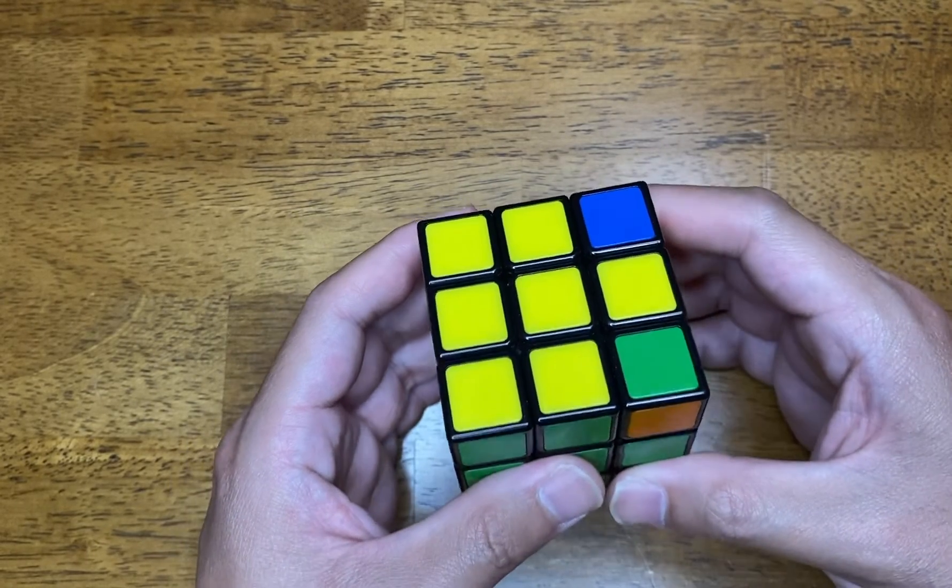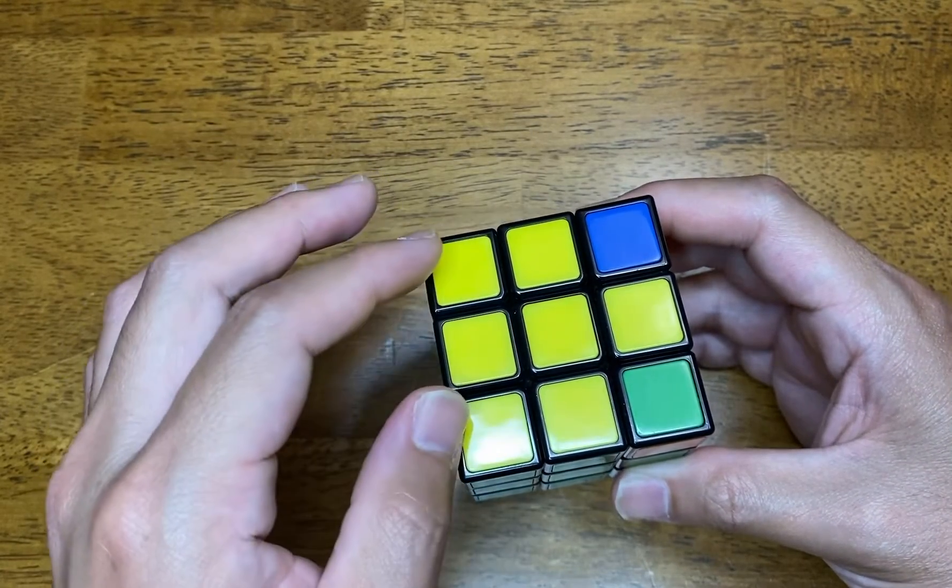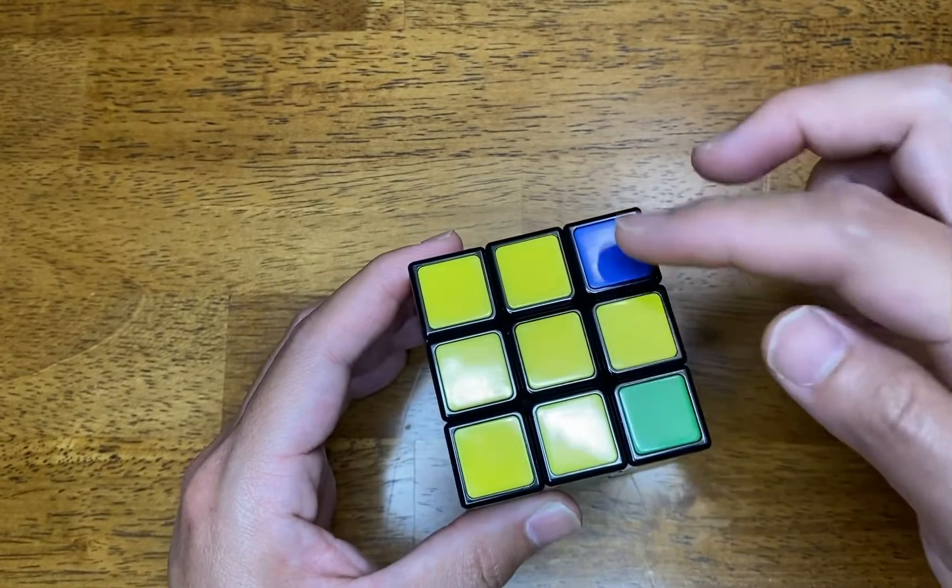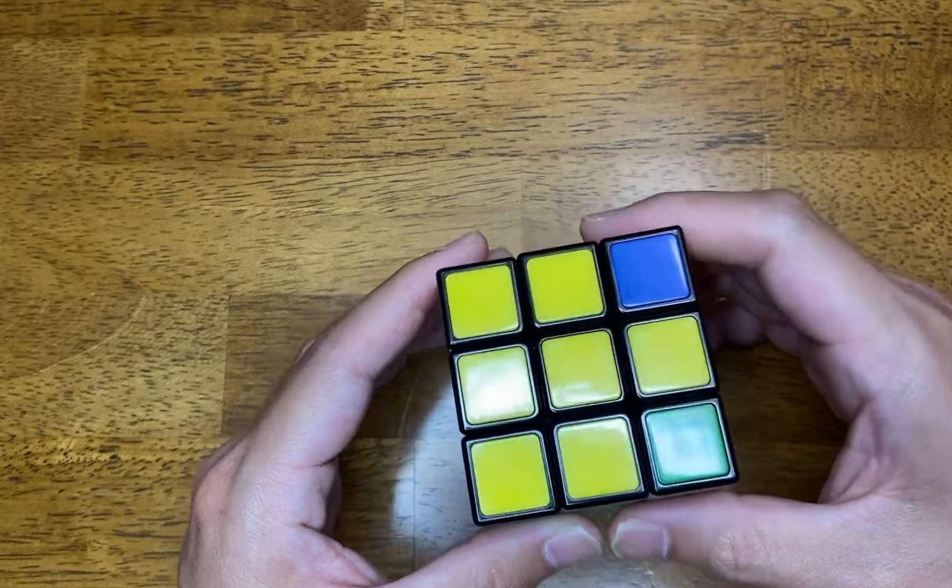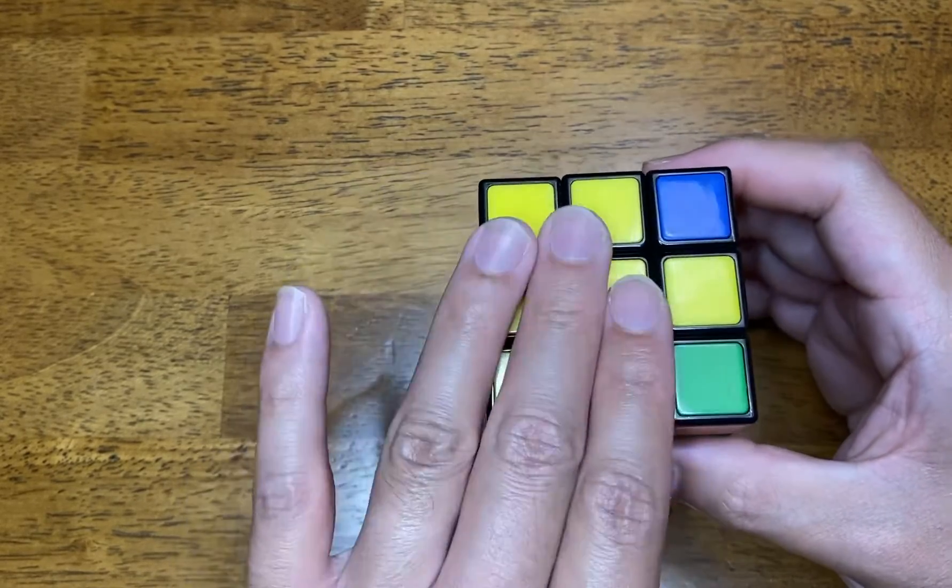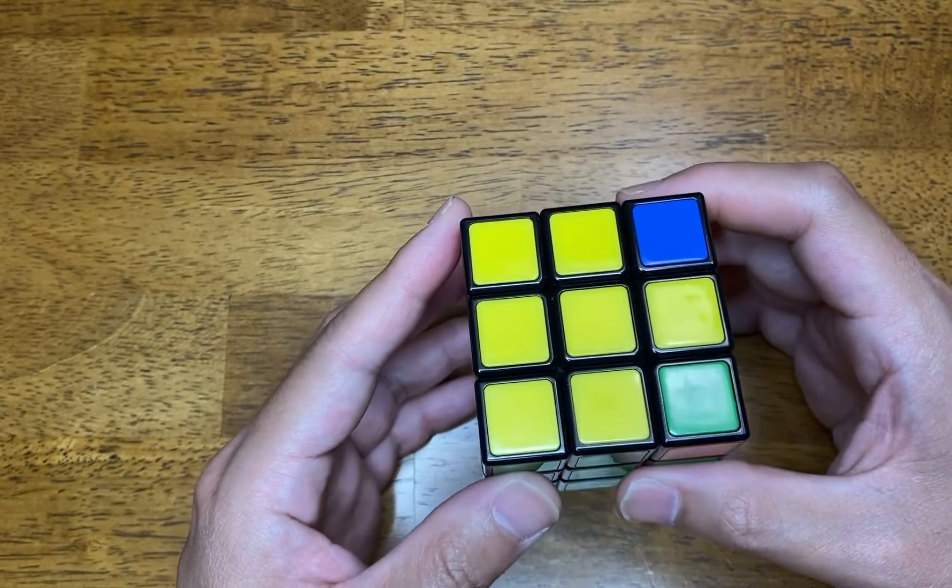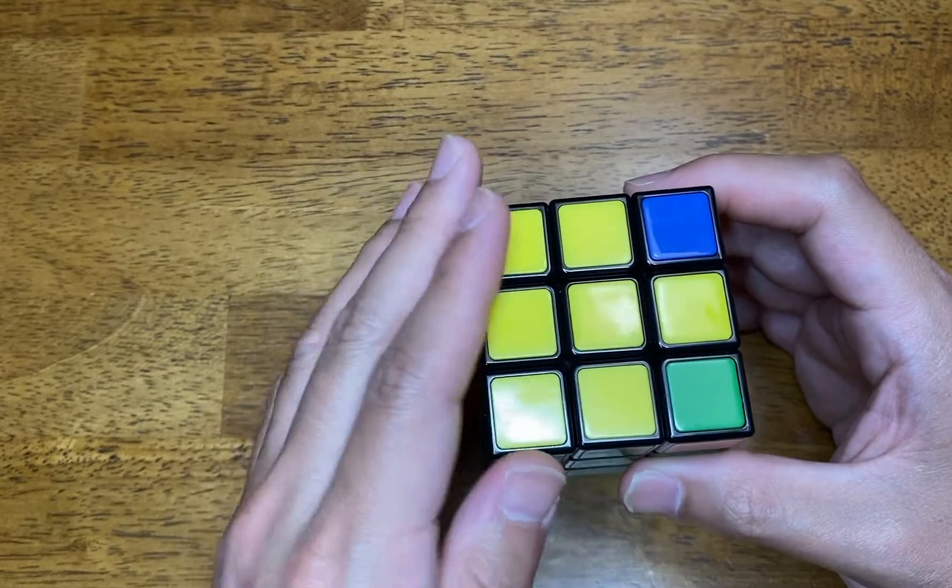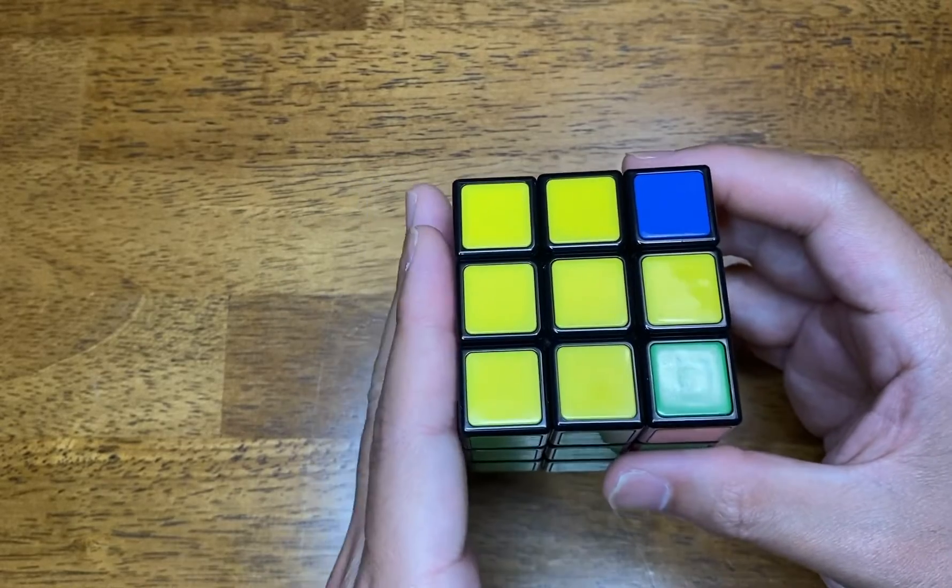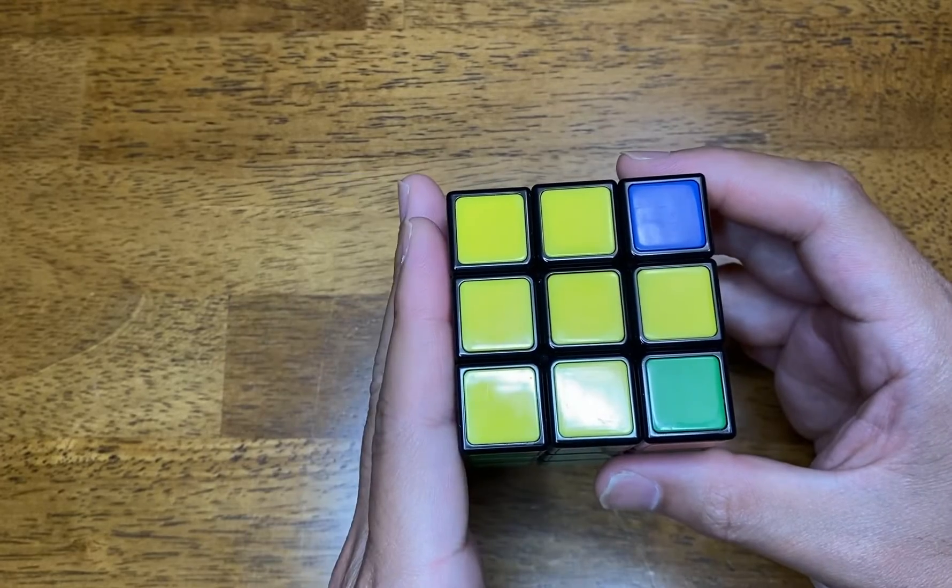So whenever all four of them are in the right spot, or in the right corner, you can hold the cube in any direction, just as long as the yellow is facing on top. Whenever you come to a situation where one side is already completed, such as this, you need to ensure you hold the cube where the correct side is facing the left.